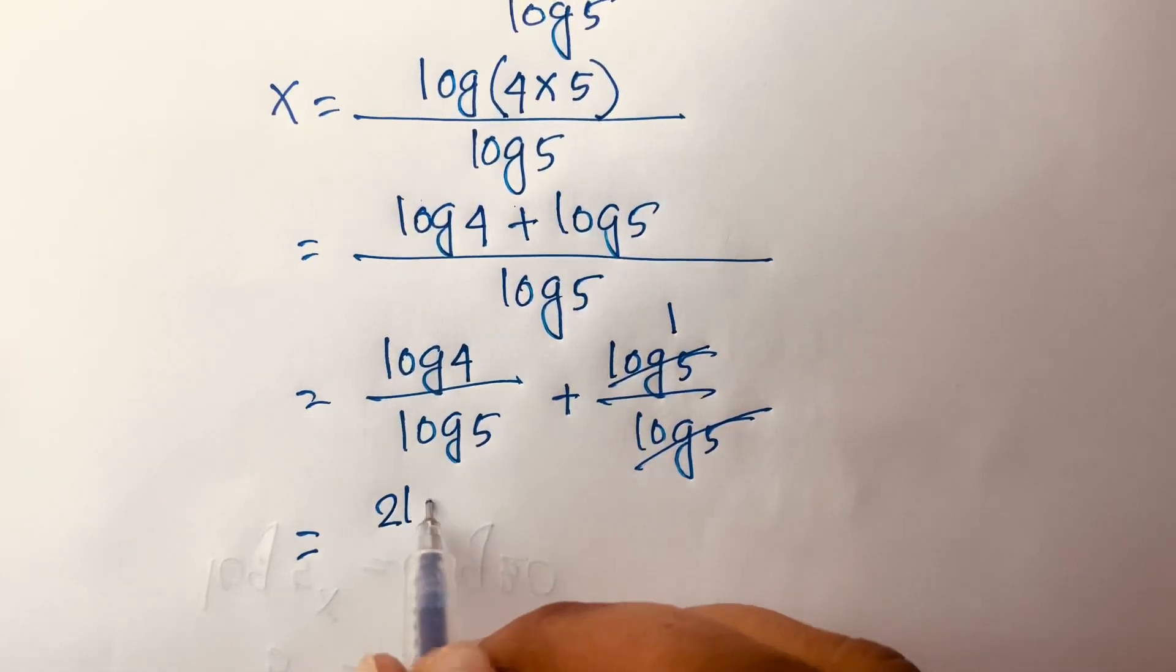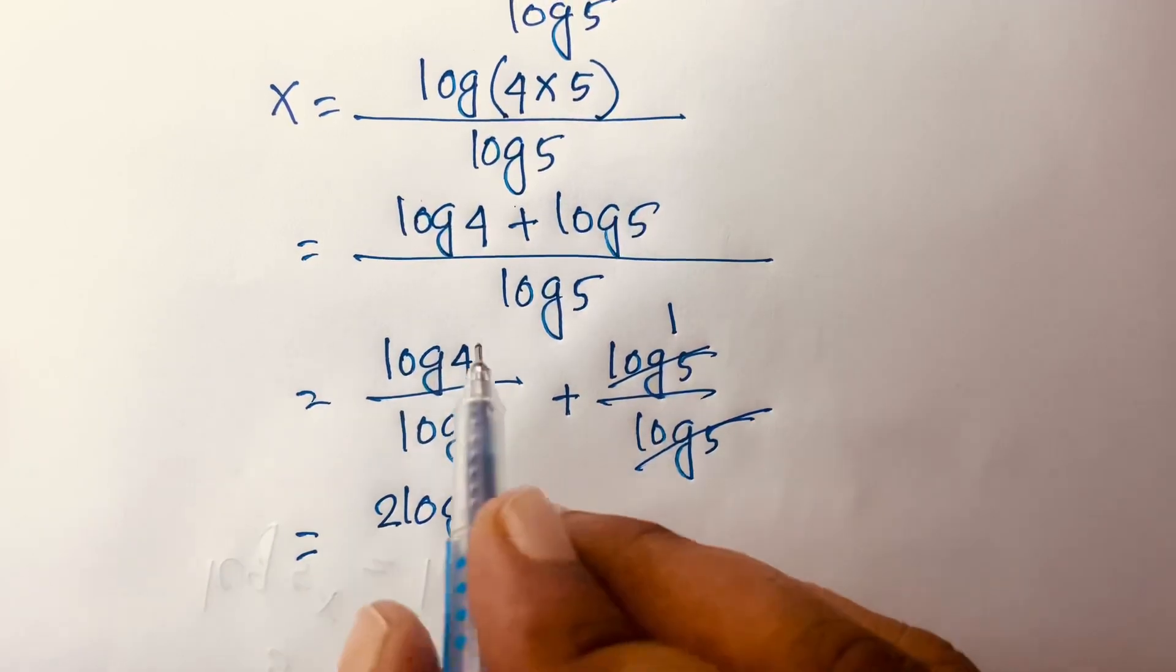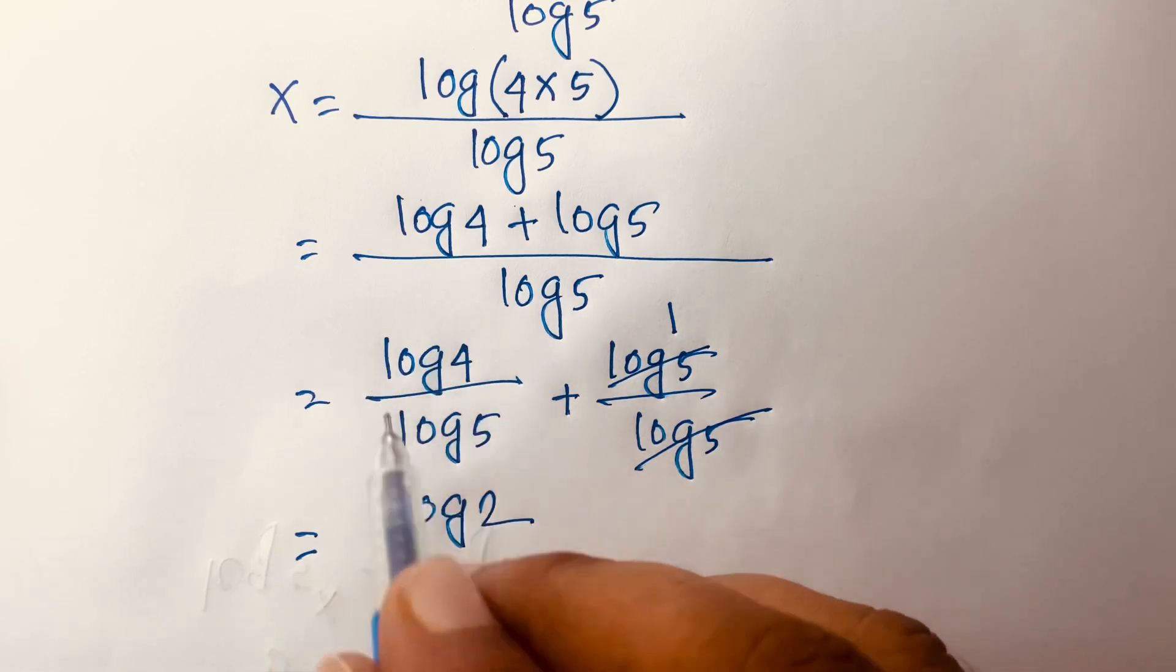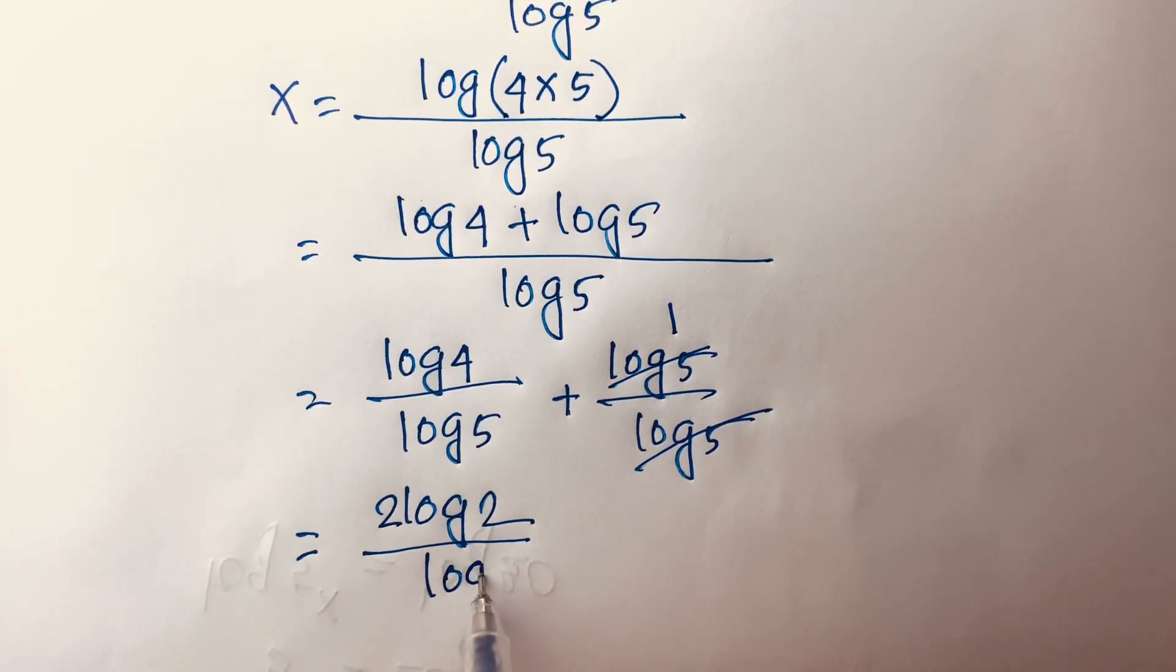And in this case, I can say it will be 2log2, because I can write 4 as 2², and this 2 moves to the front. And here is log5, plus 1.